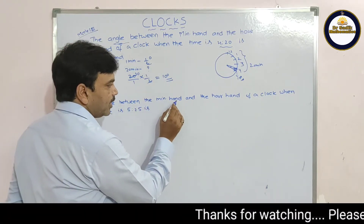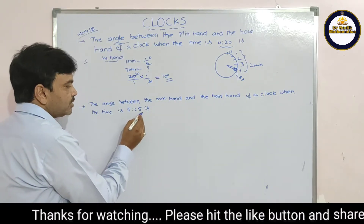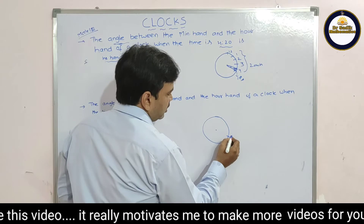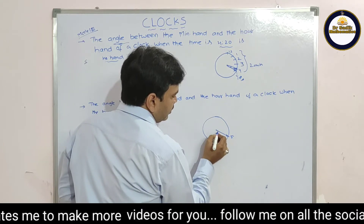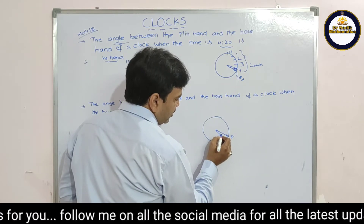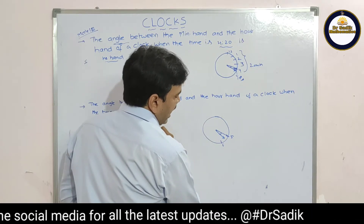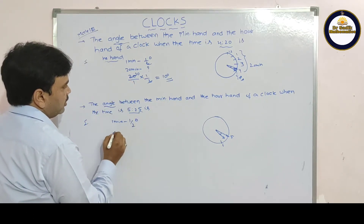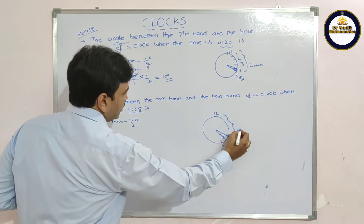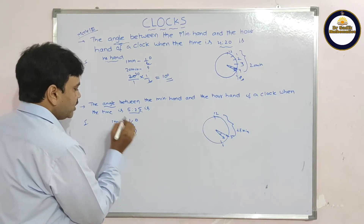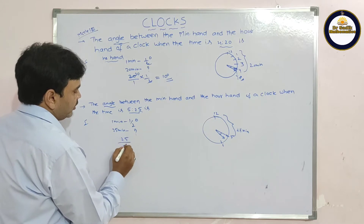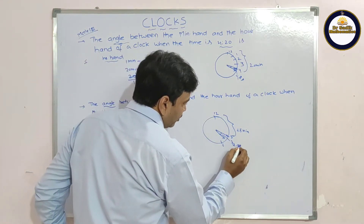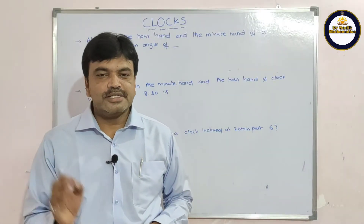The angle between the minute hand and the hour hand of a clock when the time is 5:25. At 5:25, the minute hand is at 5. The hour hand has moved some angle beyond 5. In one minute the hour hand makes half a degree. From 12 to 5 is 25 minutes, so 25 × (1/2) = 12.5 degrees. The angle is 12.5 degrees. Let us see another problem.